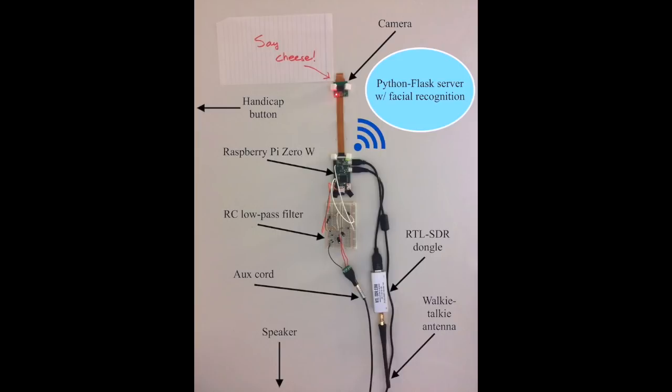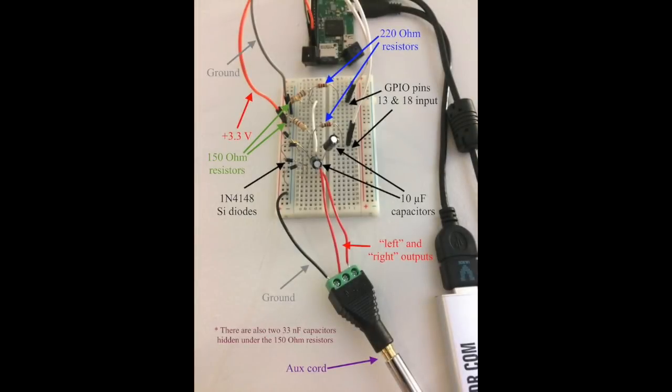The system will then ask the user to identify himself or herself to the camera. Since the Zero model of the Raspberry Pi has no audio output, a simple RC low-pass filter circuit is used to convert pulse-width modulation signals from GPIO pins 13 and 18 on the Raspberry Pi into sound.